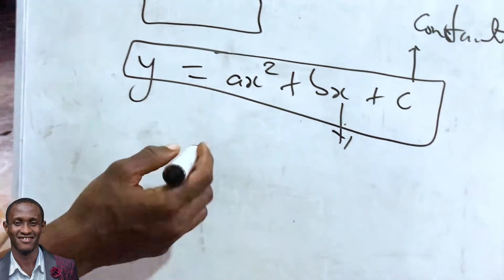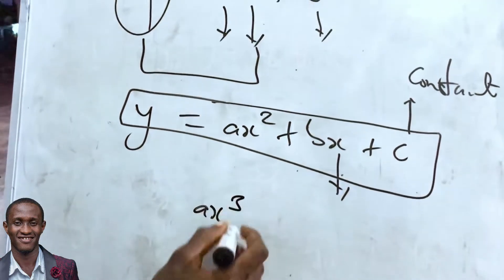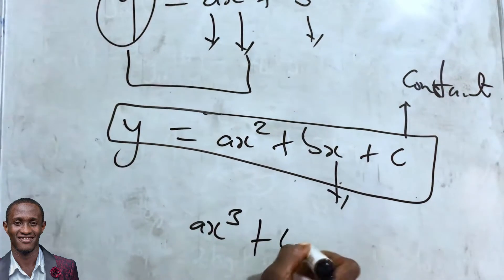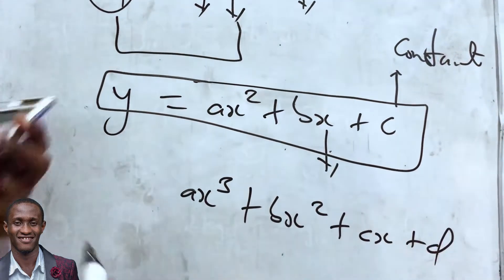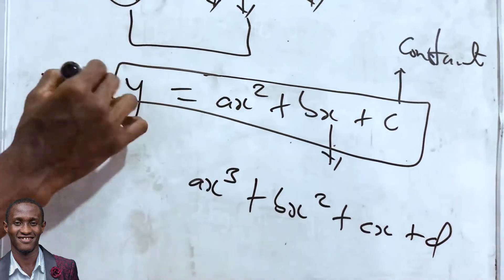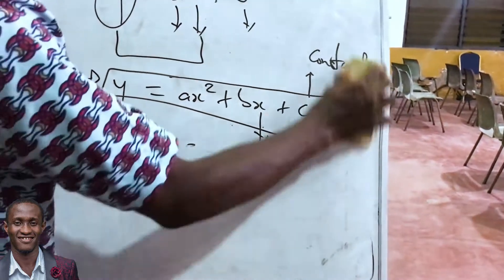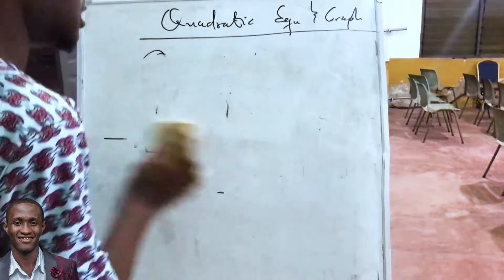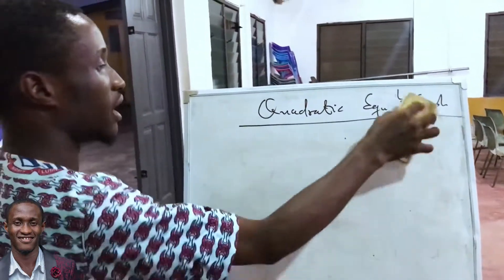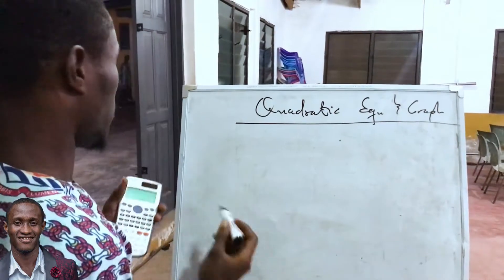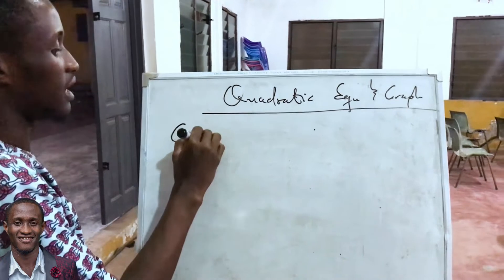We can also have a cubic equation of the form ax³ + bx² + cx + d, but our focus is on the quadratic because it mostly comes in Section B of the exam, where you will be asked to sketch the graph.